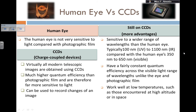There are more advantages of CCDs — they are sensitive to a wider range of wavelengths than the human eye. CCDs typically go from ultraviolet, about 100 nanometers, to the infrared, which is about 1100 nanometers. A nanometer is 10 to the power of minus 9 meters. The human eye only captures visible light, from 350 nanometers to 650 nanometers. They also have a very constant quantum efficiency across the visible light range of wavelengths, unlike the eye and photographic film, which are more sensitive to certain wavelengths than others.